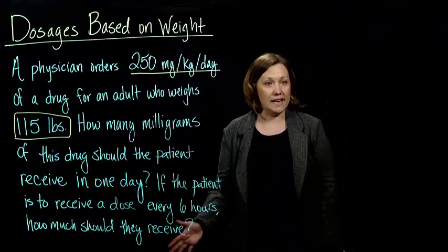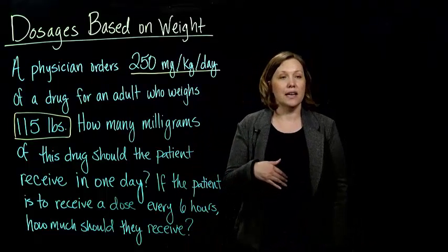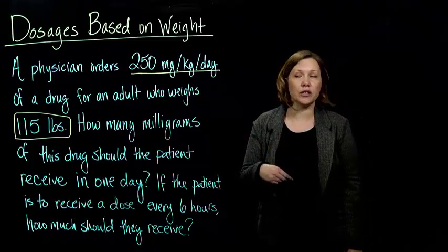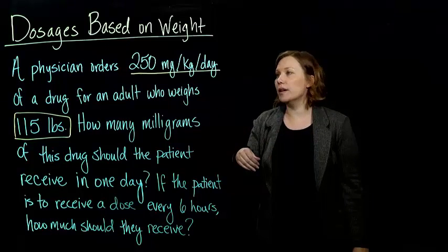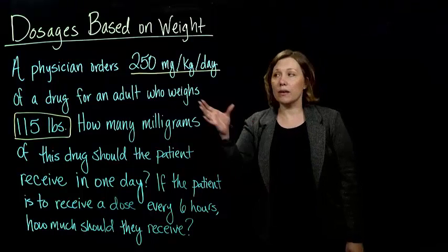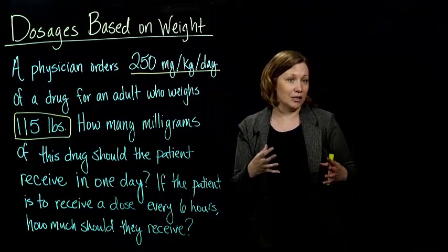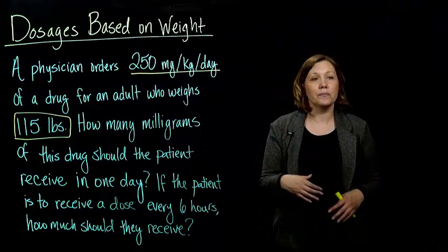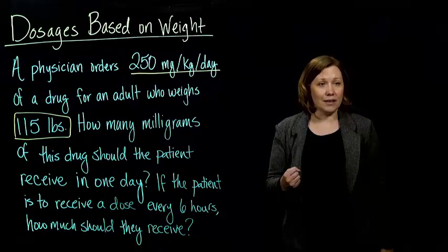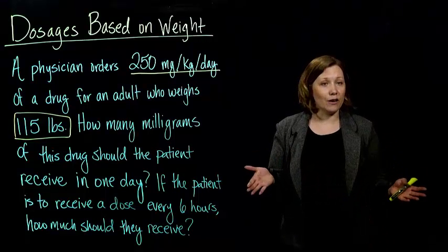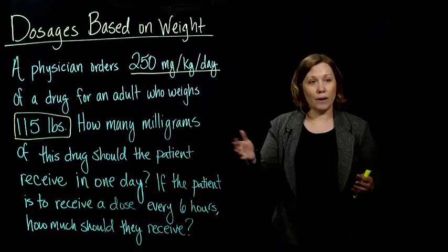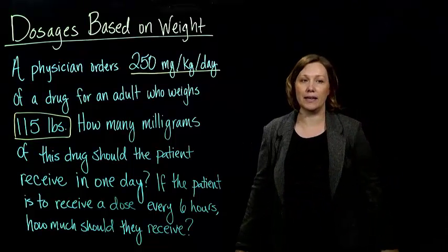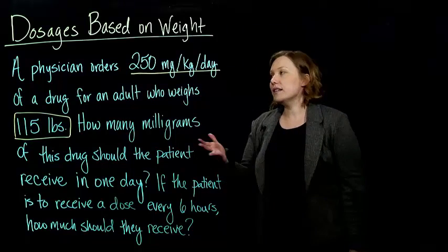So dosages based on weight. We've actually already done these in the context of those titration problems that we just finished. In those titration problems, we were having to calculate the dosage based on weight before we calculated the amount of IV solution. So we're just basically doing the same thing here, except it's very specific to the weight — we're just doing the dosage part. We don't have to get the upper limit and lower limit necessarily. So I've got an example.